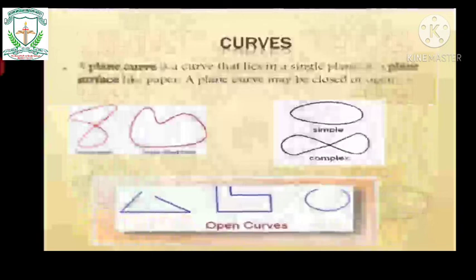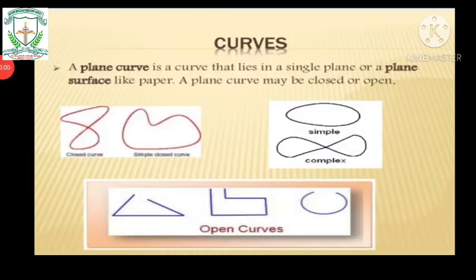The next type is open curves. Open curves do have end points, but they do not enclose any area. There is no area enclosed. You can see the open curves — they have end points. These last three curves are examples of open curves.